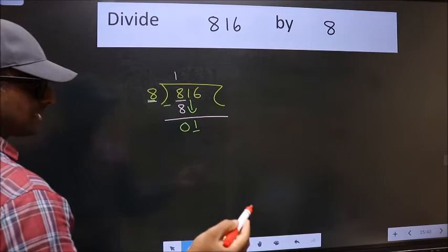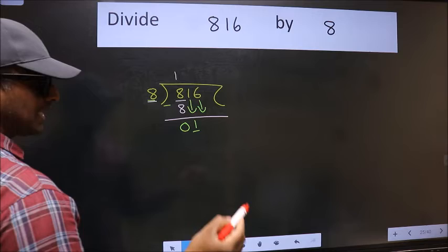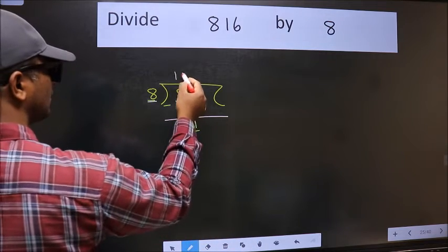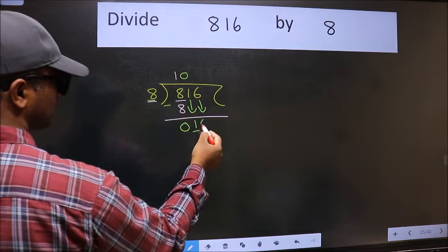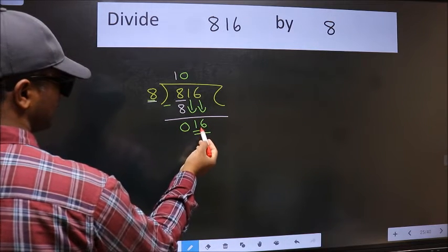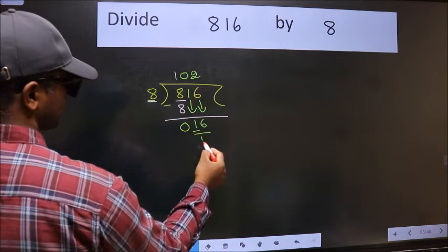So we should bring down the second number. And the rule to bring down the second number is we should put 0 here. Then only we can bring this number down. Now 16. When do we get 16 in 8 table? 8 to 16.